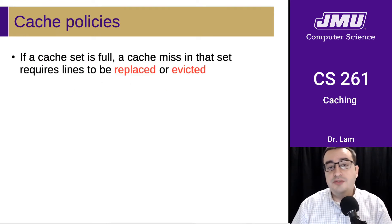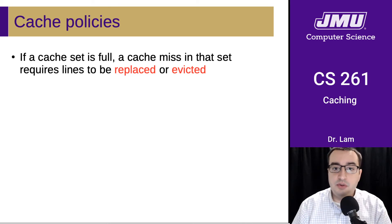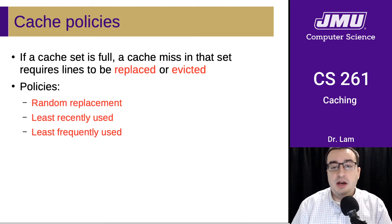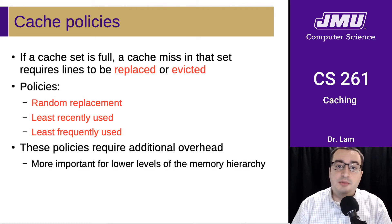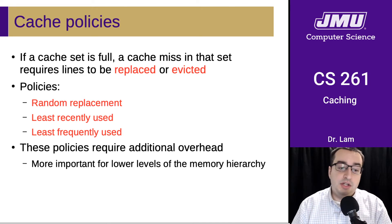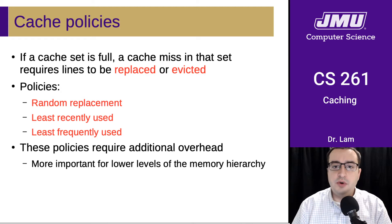Once the cache set is full, a miss in that set is going to require some of those lines to be replaced or evicted. There are a bunch of policies for this, such as picking the least recently used or the least frequently used. However, some of these policies require additional overhead, which can be a bad thing, especially for certain levels of the memory hierarchy.